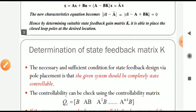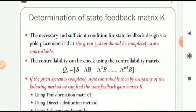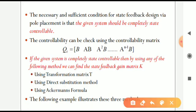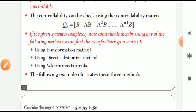Coming to the determination of the state feedback gain matrix K: the necessary and sufficient condition for state feedback design via pole placement is that the given system should be completely state controllable. Controllability can be checked by means of the controllability matrix Qc equal to [B, AB, A²B, ..., A^(n-1)B]. If the rank of the controllability matrix is equal to n, the order of the system, then the system is completely state controllable.